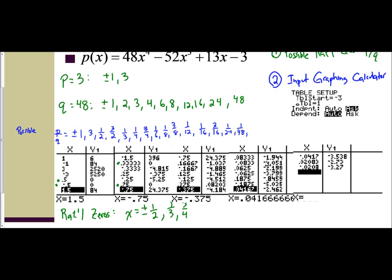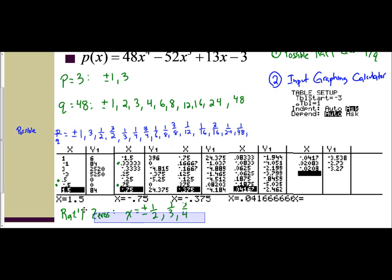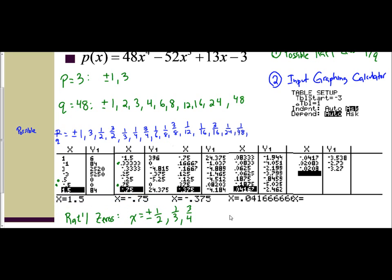So this is our complete list: 1 half, negative 1 half, 1 third, and 3 fourths. This one was a long process because there were so many factors with 48 that we had to account for all of them. But wherever you have a y value of 0, there's your list. So the next one's not going to be as long — it's going to be a little bit quicker to do.